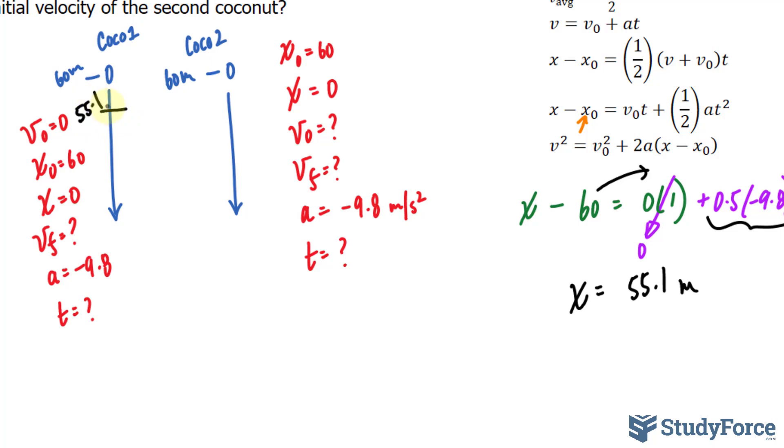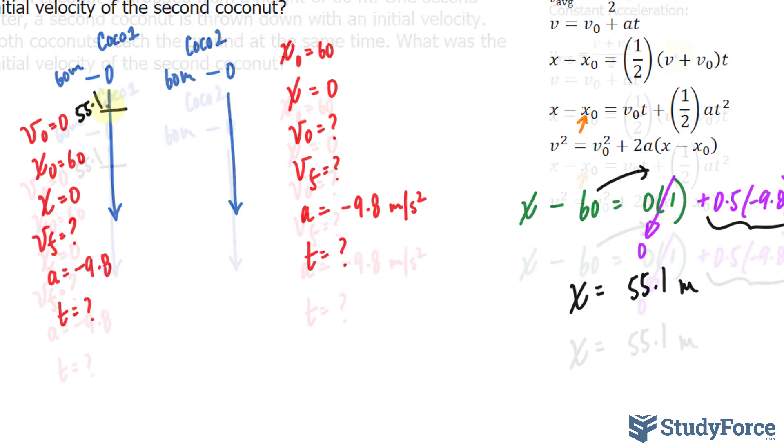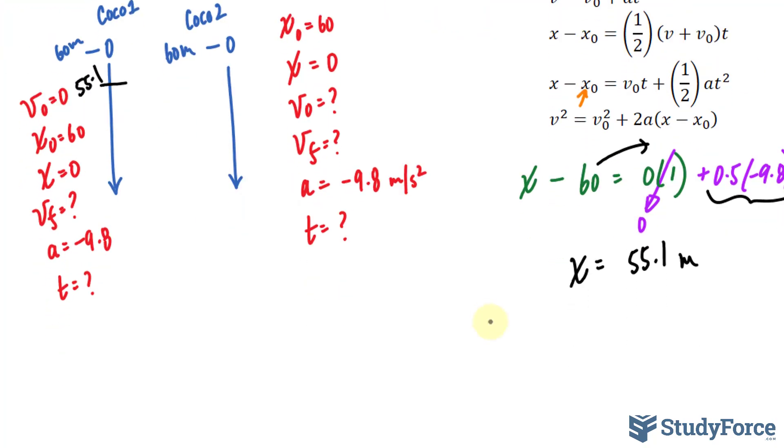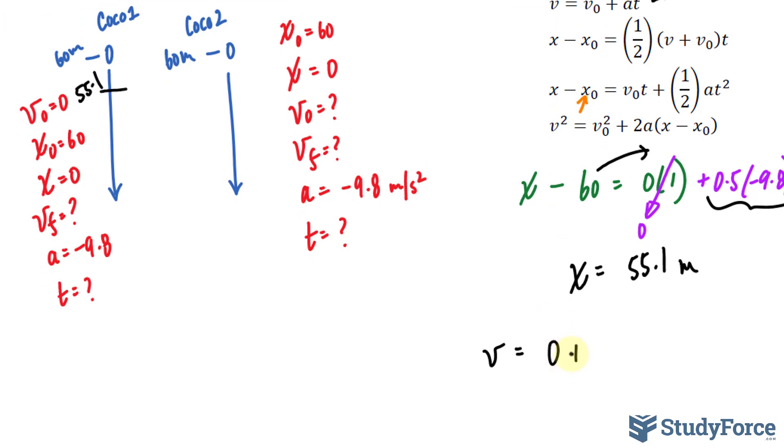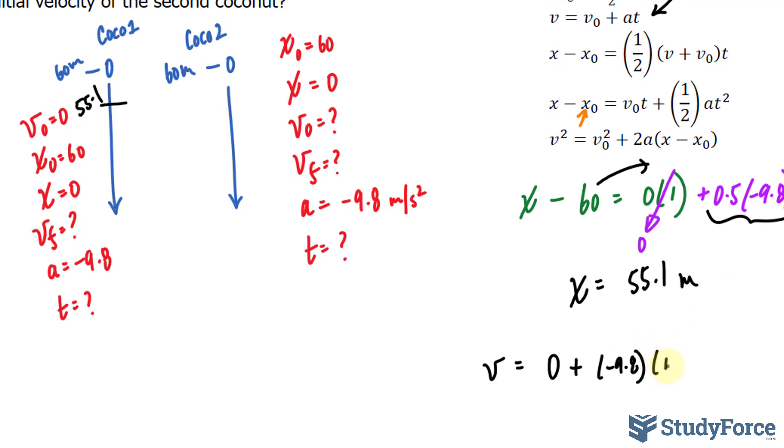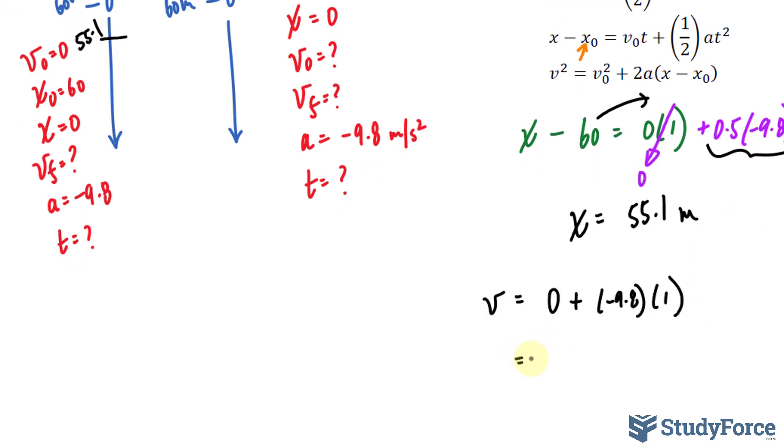Another thing that I can find using the information that I have is the velocity after one second for coconut one. And I can use this formula to help me do that. So the final velocity after one second is the initial velocity, which was zero, plus negative 9.8, the acceleration due to gravity, times one. This equals, simplifying that, negative 9.8 meters per second. The fact that velocity is negative means that it's going down. So don't get any ideas, that just gives you the direction in which this velocity is moving in.